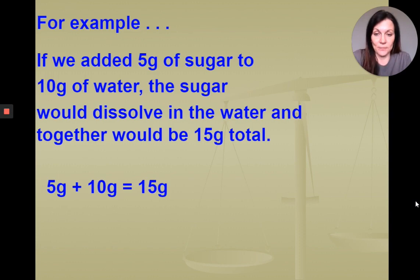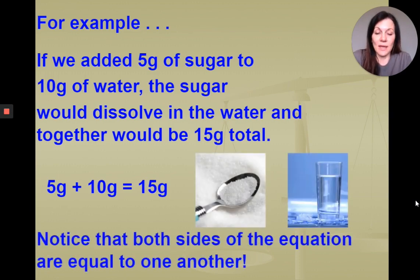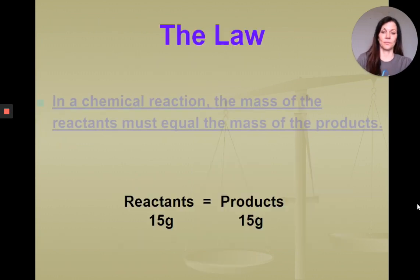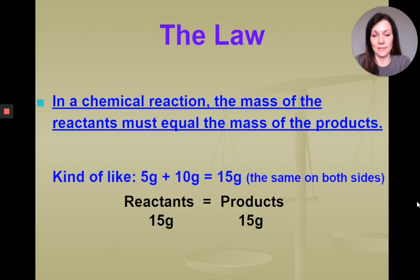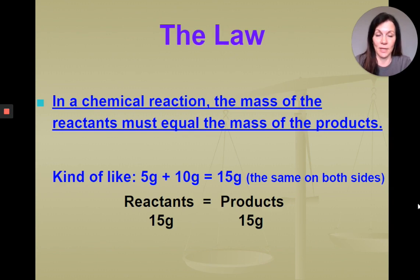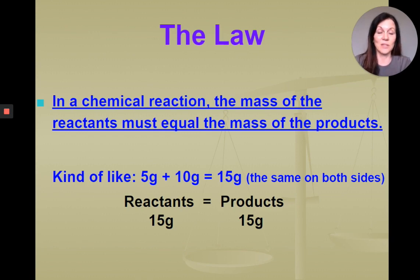This is a physical change. Notice that both sides of the equation are equal to one another. So in a chemical reaction, the reactants must equal the mass of the products. Remember, our reactants are the chemicals that we begin the reaction with, and our products are the chemicals that are produced after that reaction takes place. So it's kind of like our five grams of sugar plus our 10 grams of water equals 15 grams — the same amount on both sides.